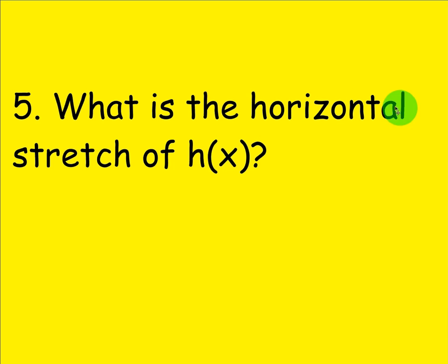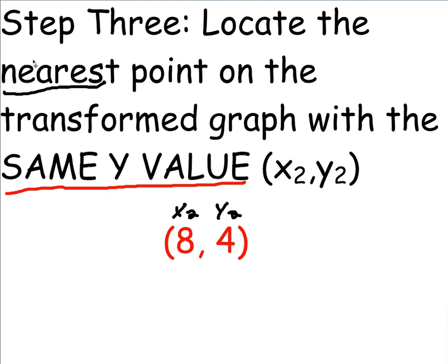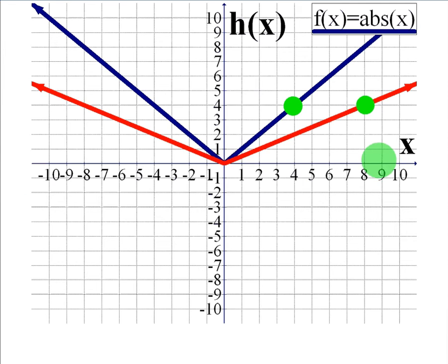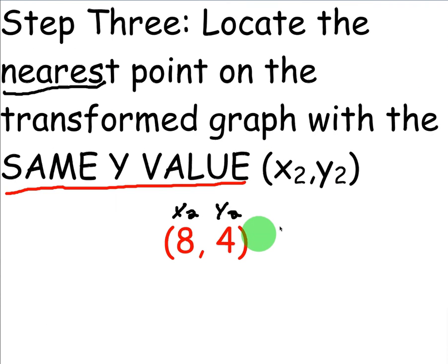Now, since this is dealing with horizontal, our next point has to have the same y value, right, because with the horizontal stretch, the x values change, keeping the same y values. So, step 3 is to locate the nearest point on the transformed graph with the same y value. So, here we are on our parent function. We can't hop all the way over here, right, because that's too far away. The nearest point with the same y value for our transformed function would be right here at 8 comma 4. So, that's going to be our point for step 3.